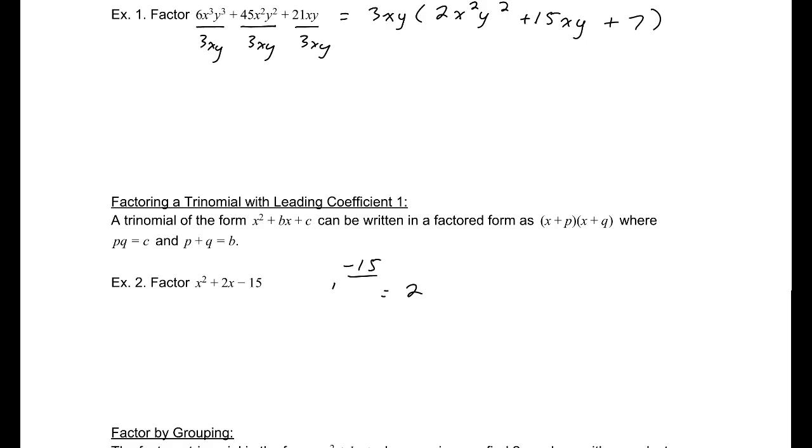Our constant and our coefficient on x respectively. So I'd go down my list, 1, -15, doesn't work. 3 and 5, how about 3 and -5, that doesn't work. How about -3? -3 plus 5 is in fact 2. So these are the two that I want. Now based on this statement here, I can write this as (x - 3)(x + 5).